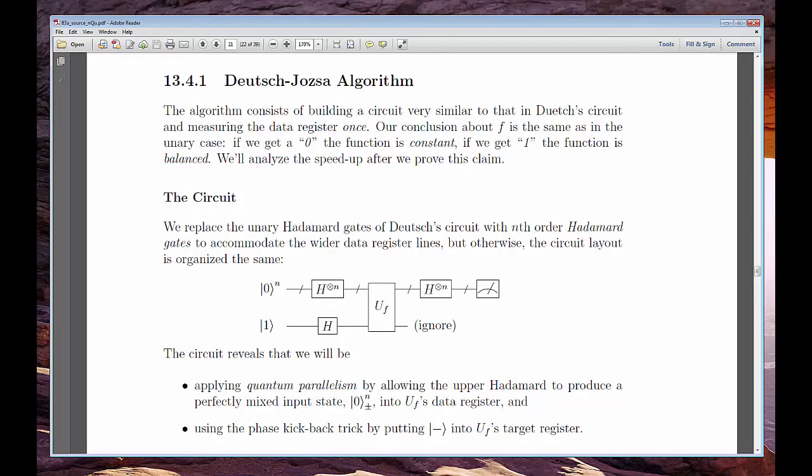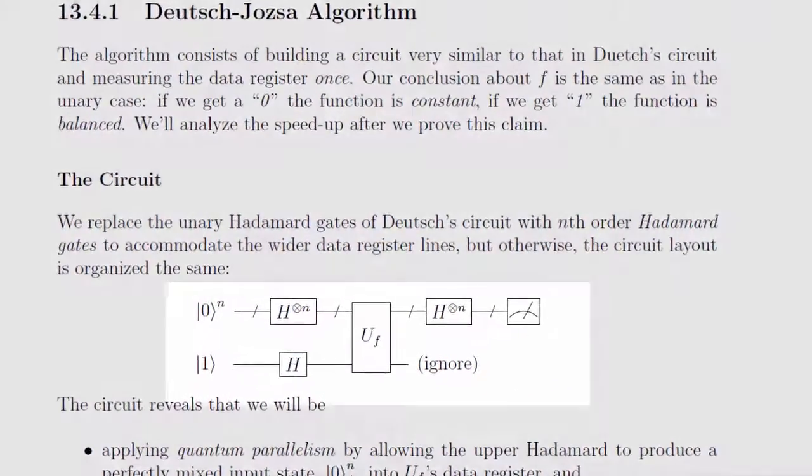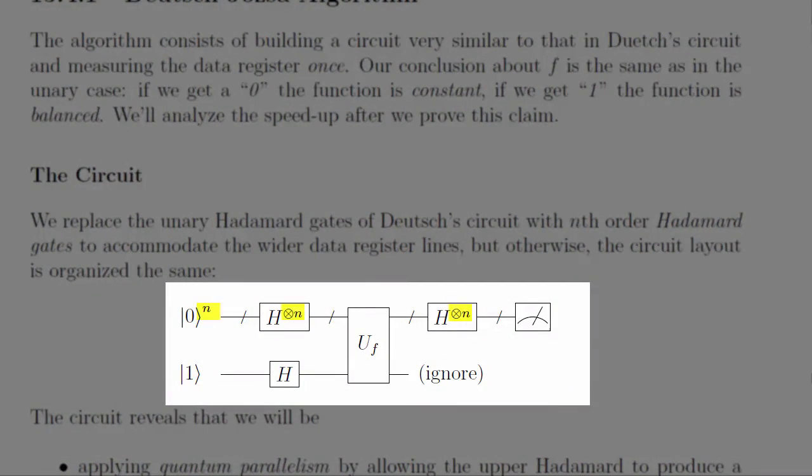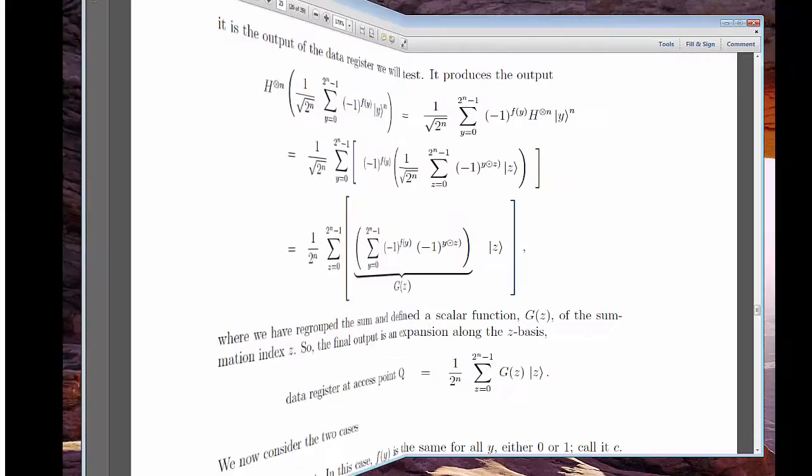Deutsch's algorithm was more a proof of concept than anything else. It was a paltry two-times speed-up over classical methods applied to a problem so small it hardly justifies the expense of a quantum computer. The Deutsch-Jozsa algorithm solves the same balanced-versus-constant problem but for a function of n bits.